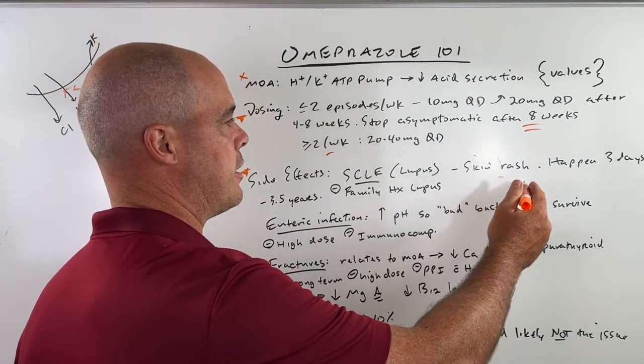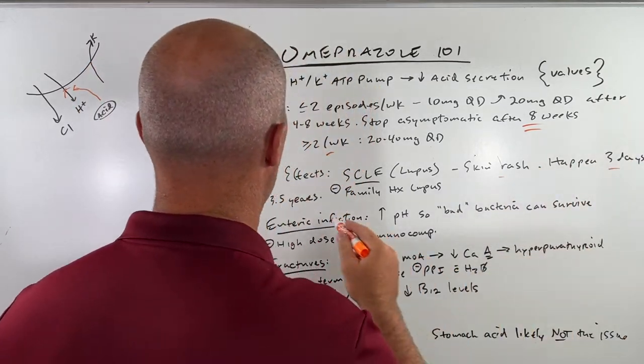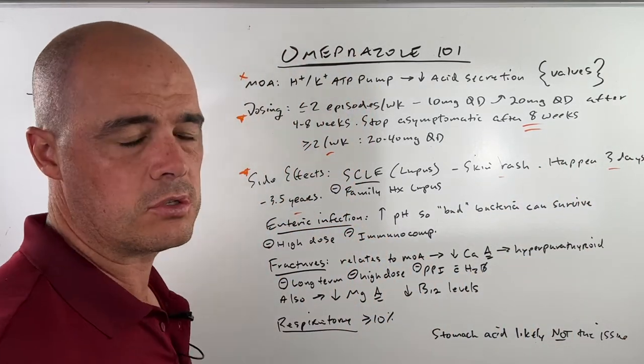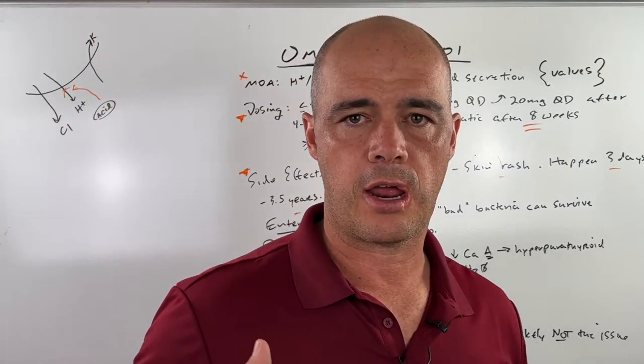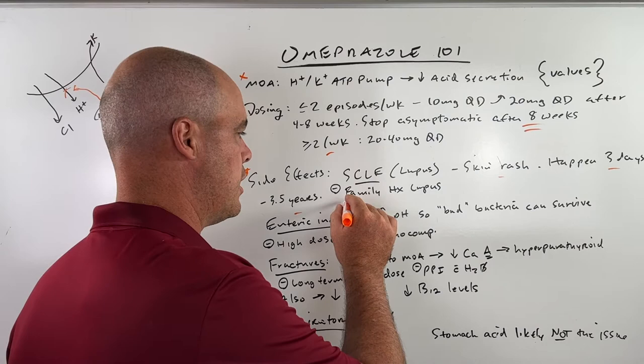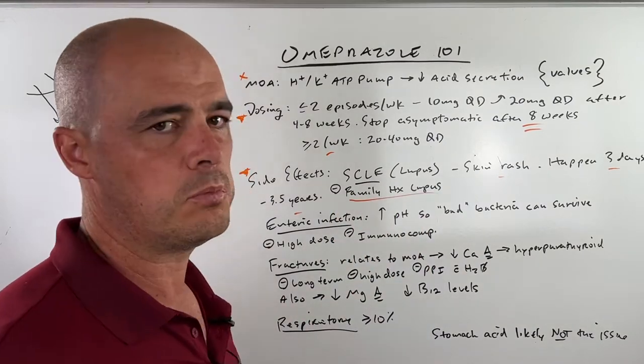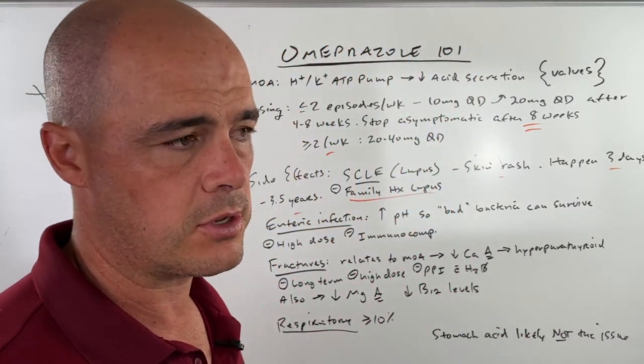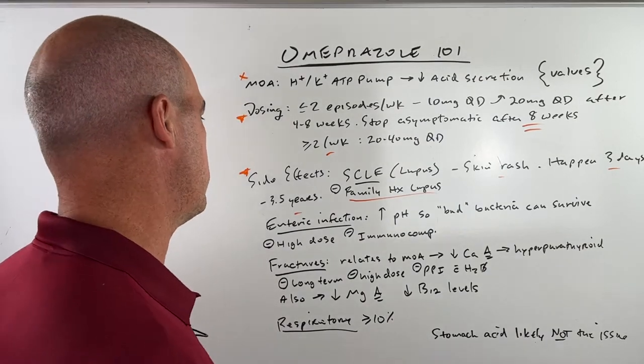Basically a skin rash. It can happen within three days. It can take three and a half years. So it's what they call idiosyncratic. There's no way to predict who it's going to happen to. However, if you have a family history of lupus, that's something you're going to watch out for. That's a big risk factor for it.